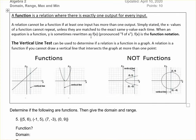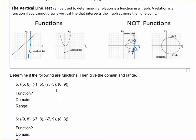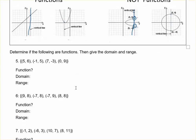Next, a reminder of what a function is and what it is not. You can use the vertical line test: if a vertical line only passes through your function one time, then it is a function. That means for every value of x, there is one and only one y value. If a vertical line passes through the graph two times, it fails the vertical line test and is not a function. The domain and range can be given whether it's a function or not, because relations have domain and range too.